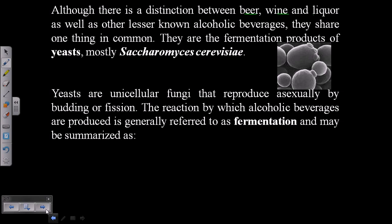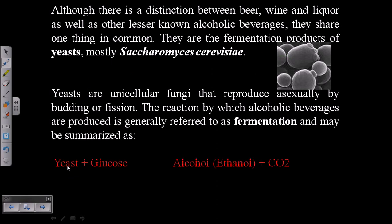Yeast are unicellular fungi that reproduce asexually by budding or fission. There are two types: budding yeast, namely Saccharomyces cerevisiae, as seen in this picture, and fission yeast, namely Saccharomyces pombe, which simply divides by fission. They are used to convert sugar into alcoholic beverages.